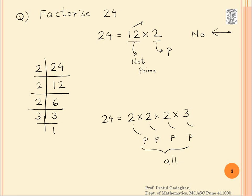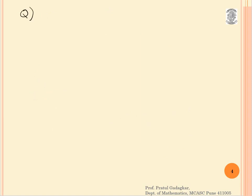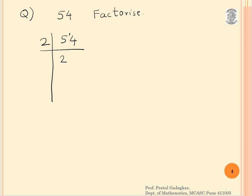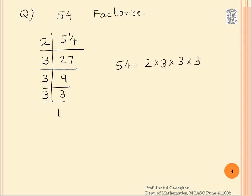Let us take one more example. Suppose we need to find the factorization of 54. 54 ÷ 2 = 27, then 27 ÷ 3 = 9, 9 ÷ 3 = 3, 3 ÷ 3 = 1. This means that 54 = 2 × 3 × 3 × 3. All four numbers — 2, 3, 3, 3 — are prime numbers.